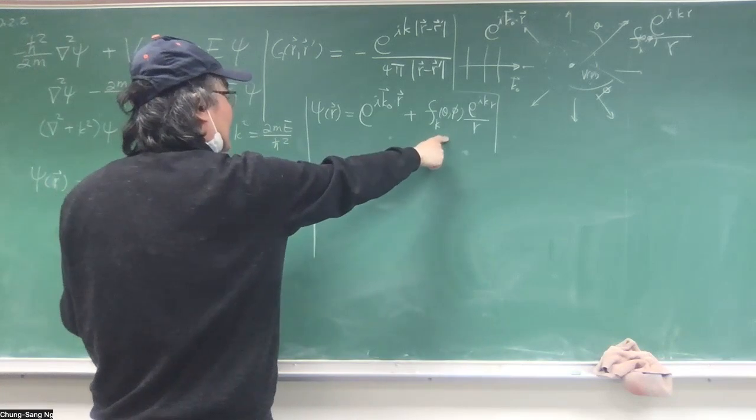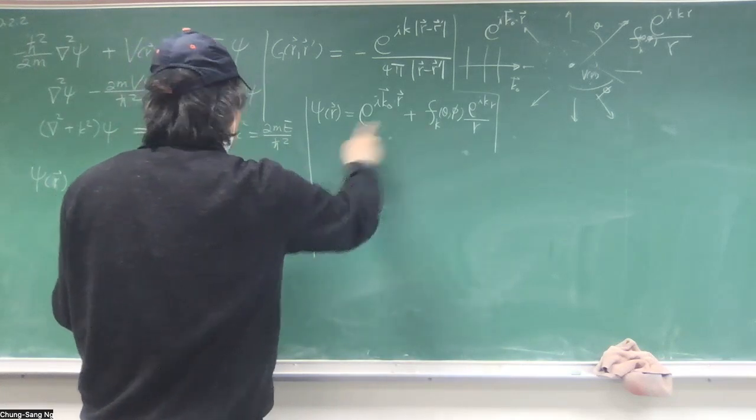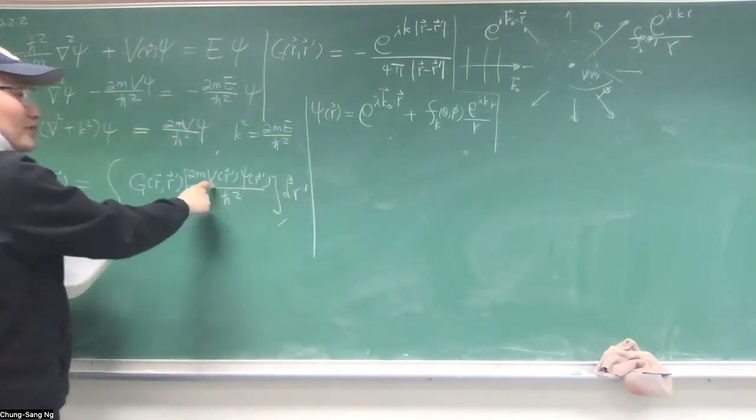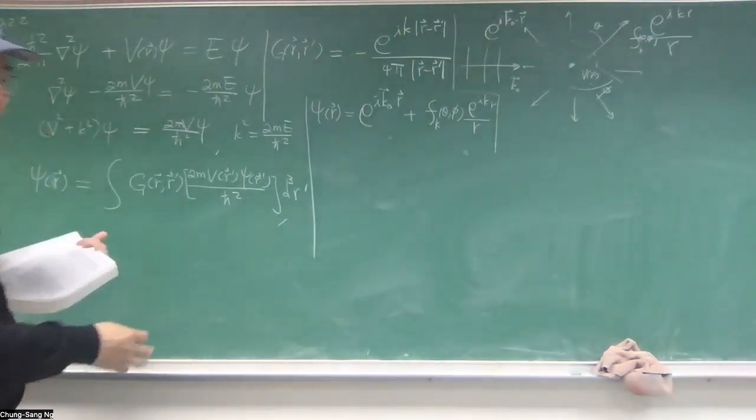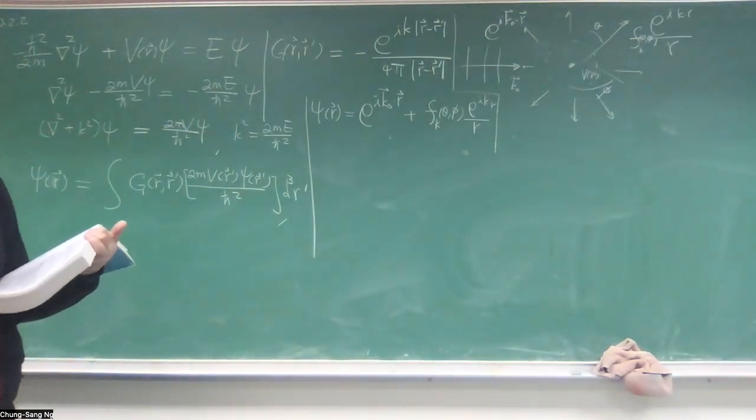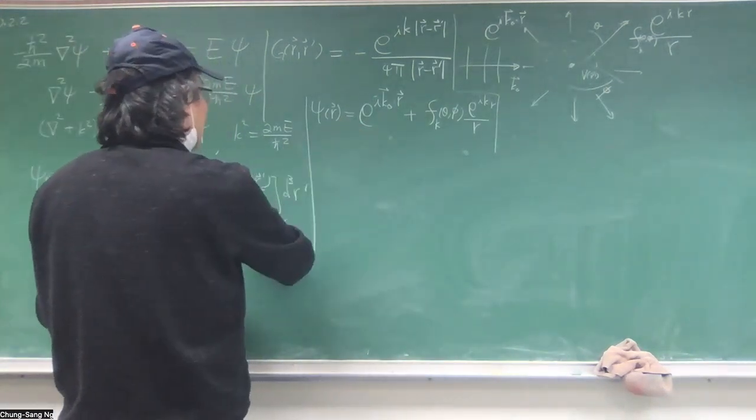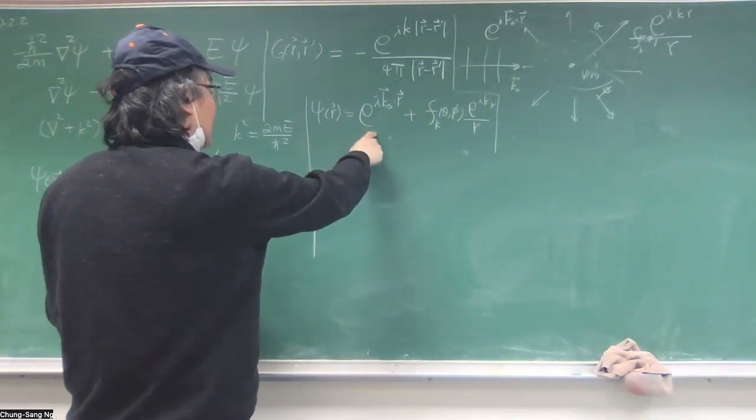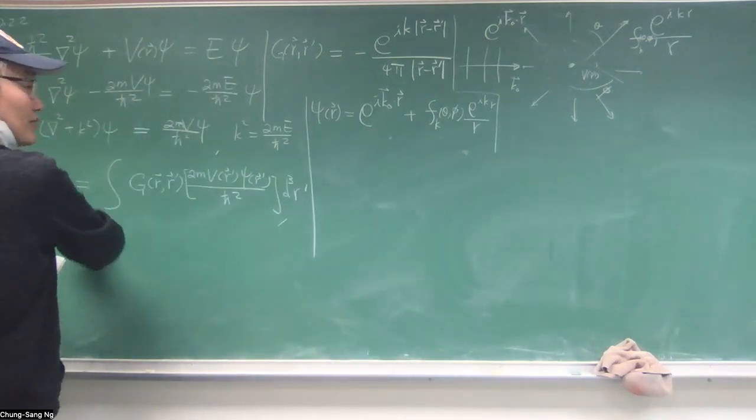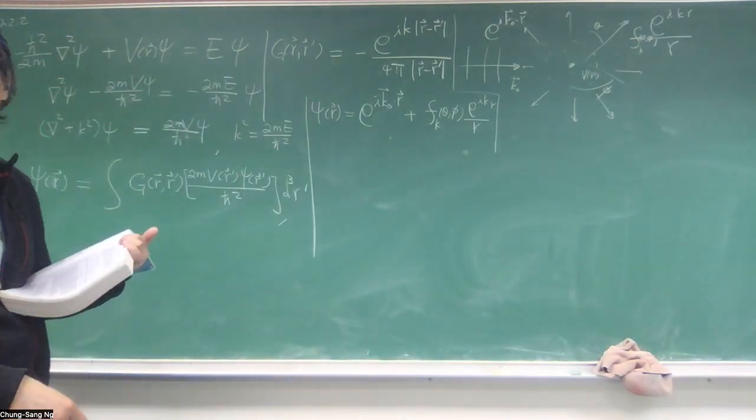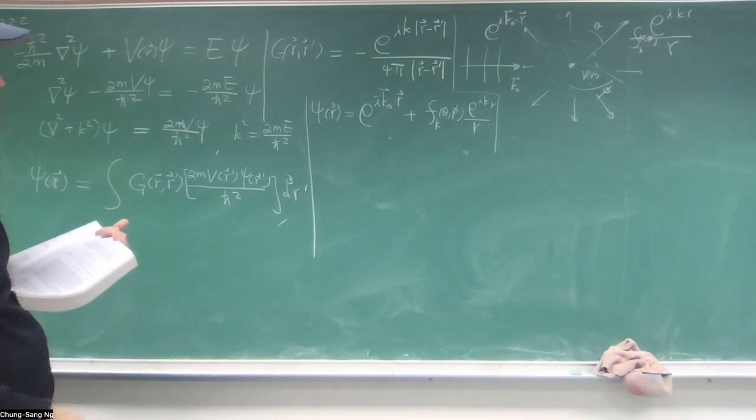To only keep the leading order term, instead of the first order term, the first order term multiplied by V, you can consider that as a second order, because both are assumed to be small. So when you put it inside the integral, you keep only the leading order, but then we put on the left hand side, keep both of them. So that's the idea.